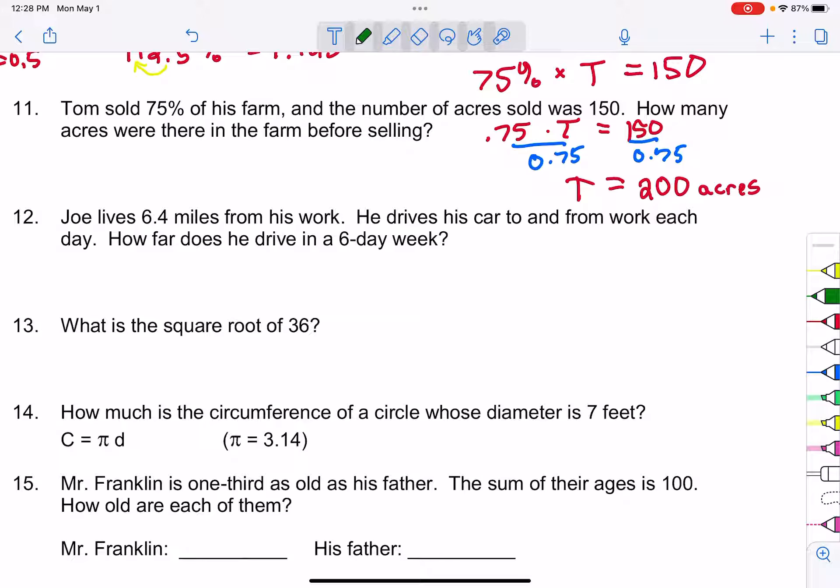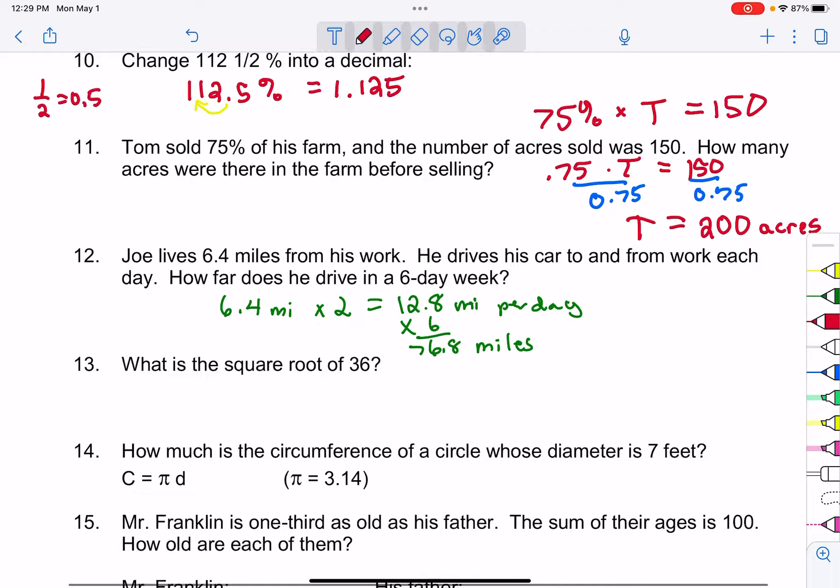Let's take a look at number 12. It says Joe lives 6.4 miles from his work. He drives his car to and from work each day. How far does he drive in a six-day week? Let's assume they're saying he's working each one of those days. So if you figure he is 6.4 miles per work, he drives it to and from work, so if we double that we get 12.8 miles every day. And if he's working six days, all we got to do is multiply those together. I mean you could add 12.8 plus 12.8 six times if you want, but it's more efficient to actually multiply and we get 76.8 miles in that week's time.